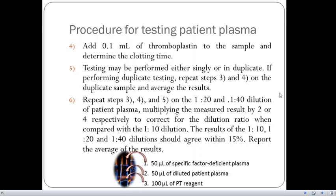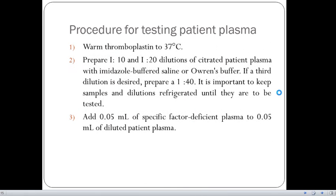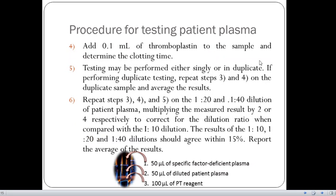Continuing with the testing of the patient plasma, we have to add 0.05 ml of thromboplastin to the sample and determine the clotting time. And then testing may be performed either singly or in duplicates. Similarly with the test that we have been doing in the first set, repeat steps 3, 4 and 5.